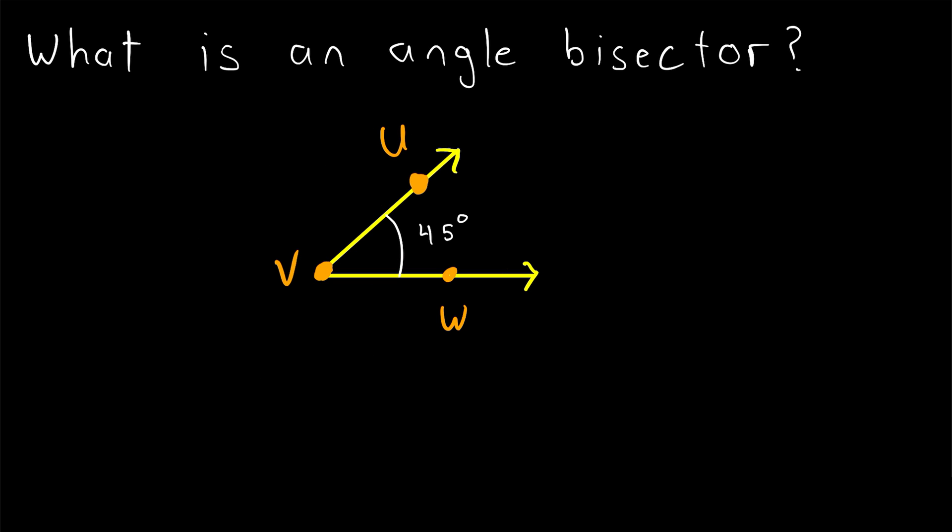So if we've got an angle like this, which we could call angle UVW, where remember we always put the vertex of the angle in the middle, then an angle bisector of the angle UVW is just a line, ray, or line segment that cuts the angle into two congruent angles.